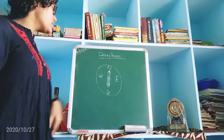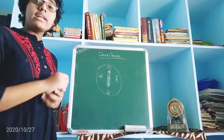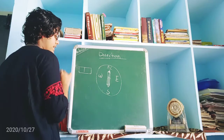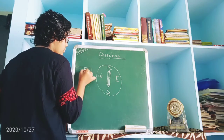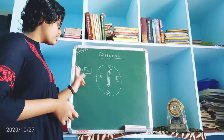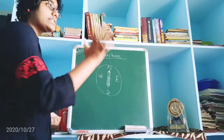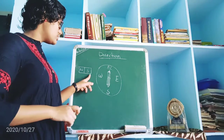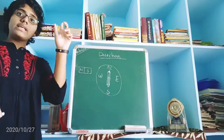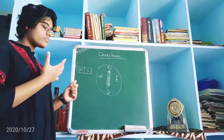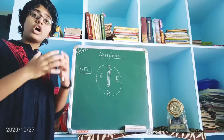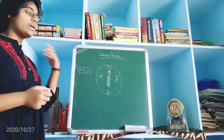How does the needle always point North? This is due to the property of a magnet. If you take a bar magnet, one end is south and the other is north. The south end of the magnet attracts towards the North direction, and the north end attracts towards the South direction. Opposite poles attract — this is why the compass needle always points North. The compass is called a Mariner's compass because a mariner was the first person to use it.